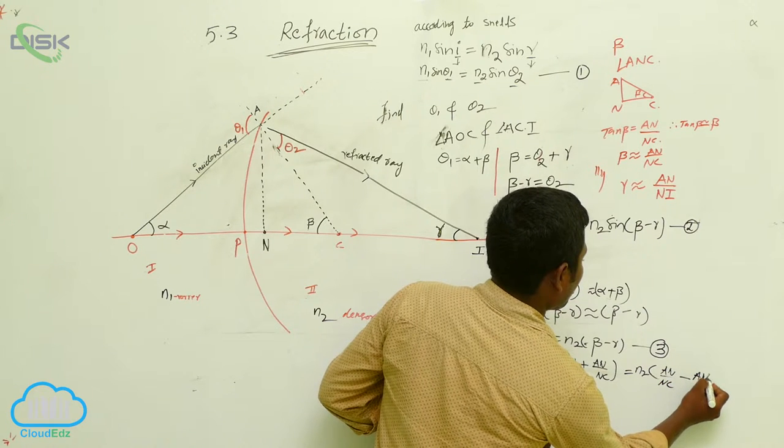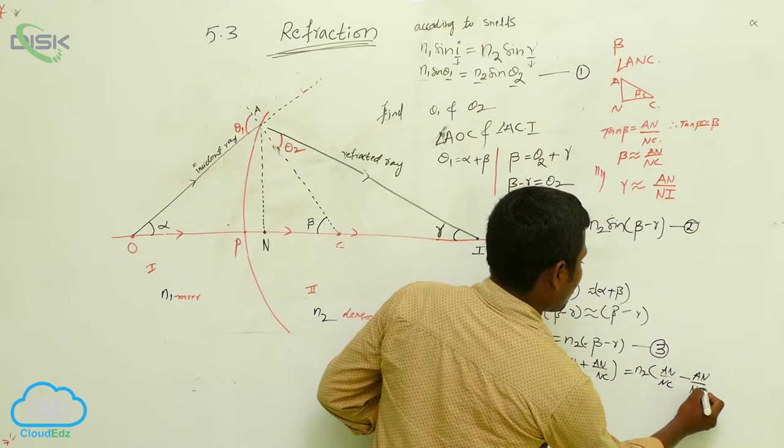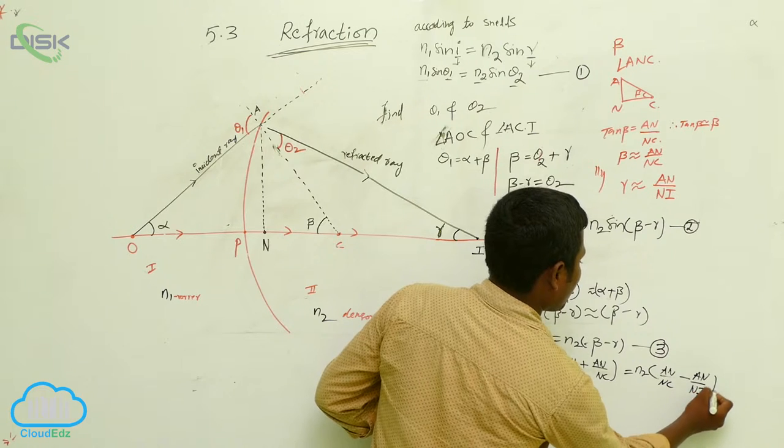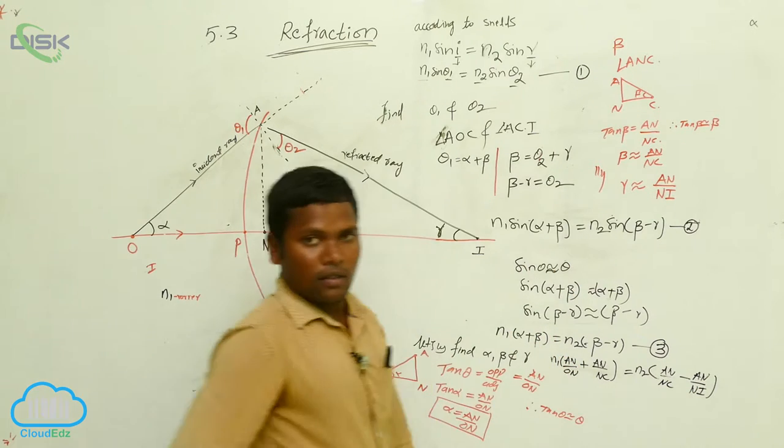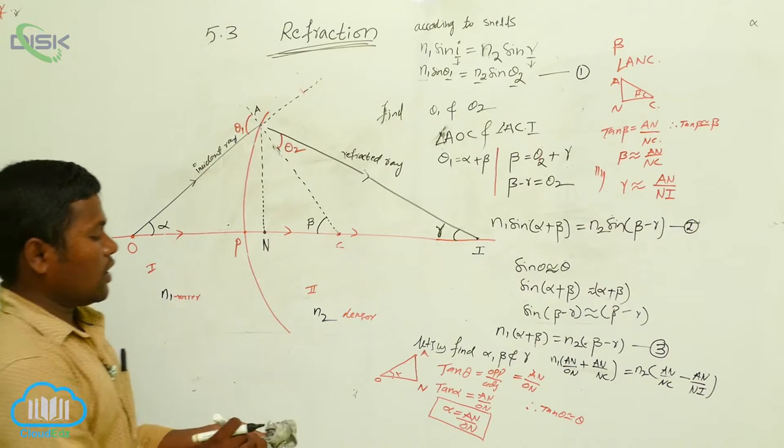And minus gamma, which is AN by NI. Like this we got the equation.